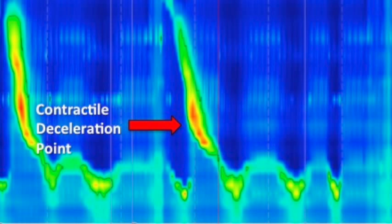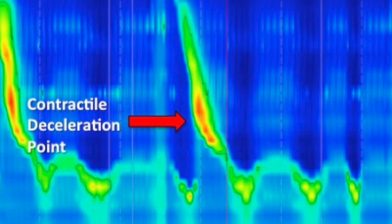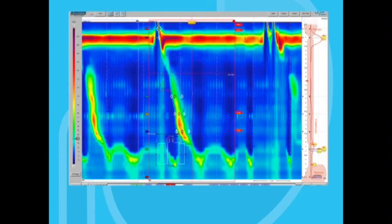The importance of the contractile deceleration point is that it is a landmark used to calculate the distal latency. So here is the same manometry tracing with the analysis mode on. The distal latency is defined as the time in seconds from the onset of the swallow, see the vertical white line, to the contractile deceleration point, see the horizontal white line.